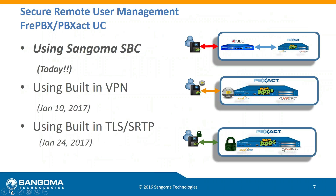We're going to have three sessions. There are three different approaches to provide secure access to remote users when using an IP PBX — specifically FreePBX or PBXact. Today, we're presenting how to do it using an SBC as one of the components of the architecture. On January 10th, we'll show how to implement VPNs using the VPN capabilities built into PBXact or FreePBX. The third session will be dedicated to enabling TLS and SRTP as a secure way to connect SIP communications between remote users and the PBX.